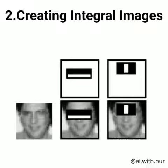That difference leads us to the second stage: the integral image. The integral image is used to make this process super fast. However, this stage alone cannot properly identify our eyes, so we move to the third stage.